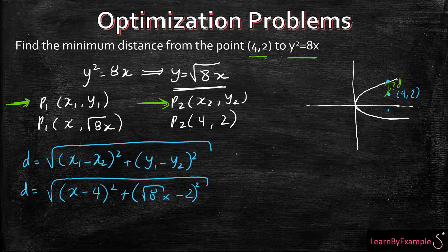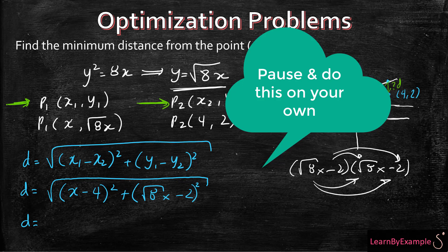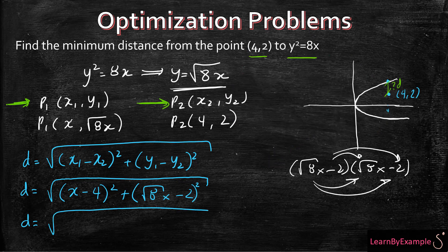In this case, if it helps you can always sketch out root 8x minus 2 times root 8x minus 2, so that you can see when you're multiplying what everything is equal to. You can do that manually of course. So d is just going to be equal to x² minus 8x plus 16, plus 8x² because root 8 times root 8 is just 8, minus 4 root 8x, plus 4.